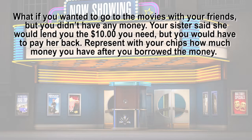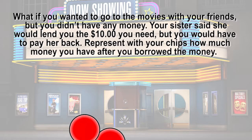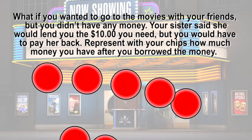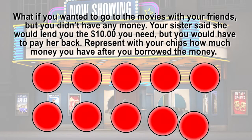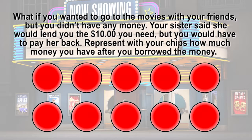What if you wanted to go to the movies with your friends but you didn't have any money? Your sister said she would lend you the ten dollars you need, but you would have to pay her back. Represent with your chips how much money you have after the movie. Your child will need to choose ten red chips to show they have less than zero dollars — they owe ten dollars, so they have negative ten dollars.